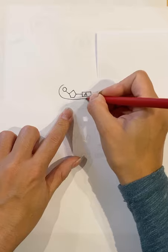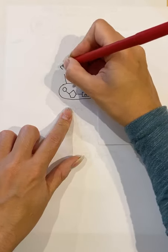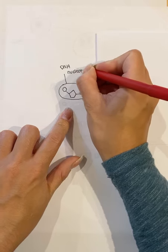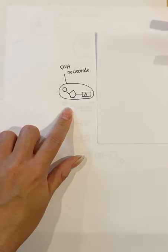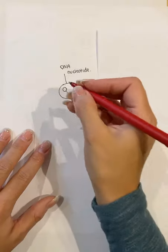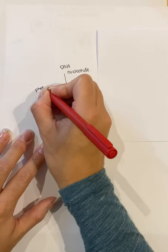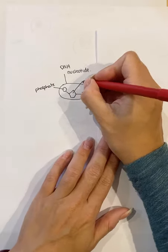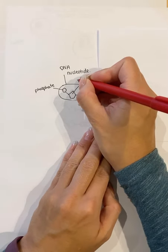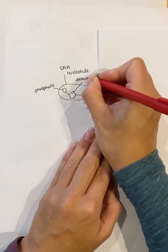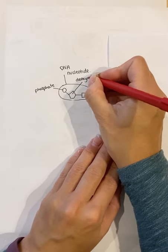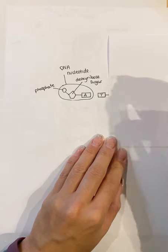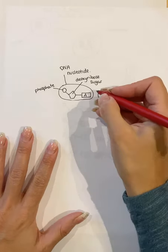Specifically a DNA nucleotide. A nucleotide is composed of three parts. The first part is the phosphate, represented by this circle. The second part is what's known as a deoxyribose sugar, and that's where DNA gets its name because deoxyribose sugar is the sugar within DNA. And DNA is called deoxyribonucleic acid.